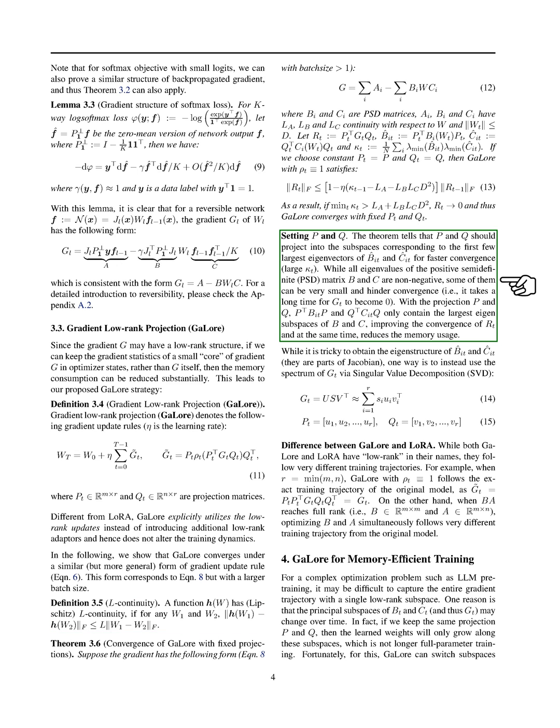The theorem suggests that projecting into subspaces corresponding to the largest eigenvectors of B_it and C_it accelerates convergence. By focusing on the dominant eigen subspaces of B and C with projection matrices P and Q, we enhance convergence and reduce memory usage.